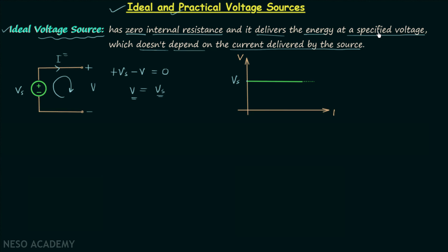An ideal voltage source delivers energy at a specified voltage, and this specified voltage does not depend on the current delivered by the source. For all values of I, V is equal to Vs, meaning it does not depend on the current drawn from the source. This also means we can draw any amount of current without changing the terminal voltage V. This is all about the ideal voltage source.